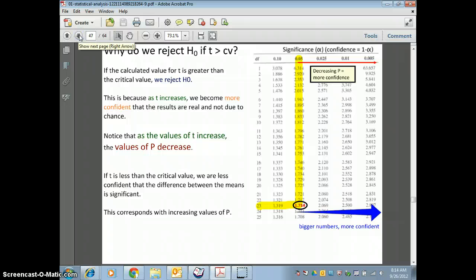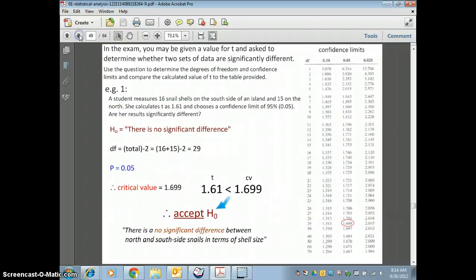If your T value that you calculated is less than the calculated value from the table, then you have to accept the null hypothesis, which says that there is no significant difference.